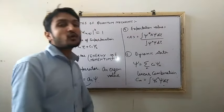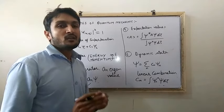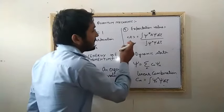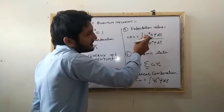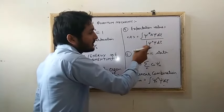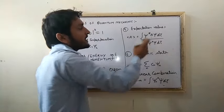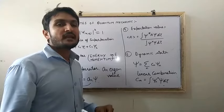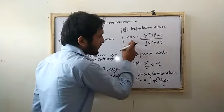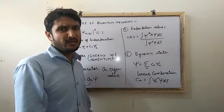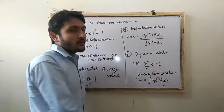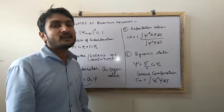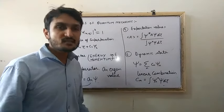Next is the expectation value or average value. If you want to measure the expectation or average value of the system or variable, we write: ⟨A⟩ = ∫ψ*Aψ dτ / ∫ψ*ψ dτ. This is the expectation value of the system, where A is the operator or variable being measured, ψ is the wave function, and ψ* is its complex conjugate. This formula is known as the expectation value or average value of the system or physical state.